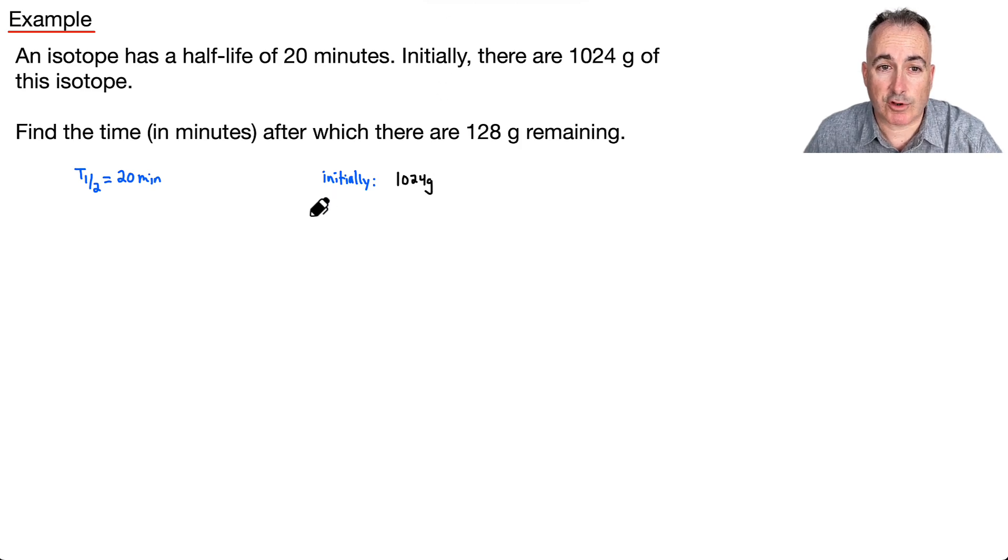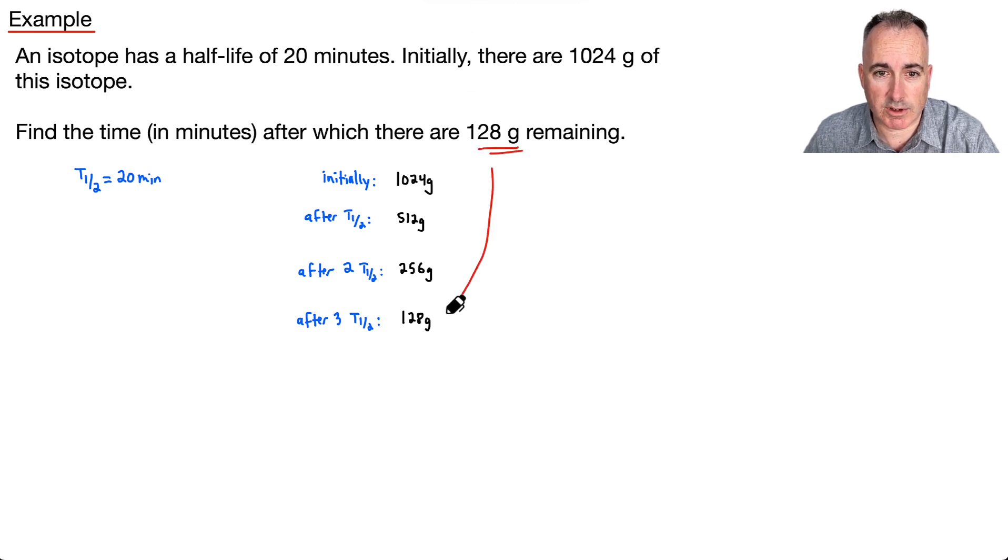What happens then? After one half-life, we have half of this, which is actually 512 grams. And after two half-lives then, we're just going to keep going. After two times T₁/₂, what do we have? We have half of 512, which is 256 grams. And we keep going, so after three T₁/₂, after three half-lives, what do we have? We have half of this, which is 128 grams. And hey, we're done. Look, this right here is what we were looking for. After three half-lives, it's 128 grams.